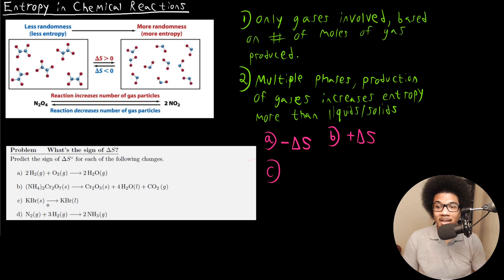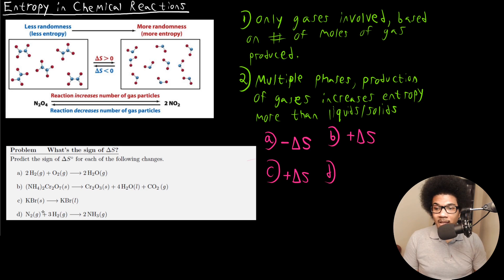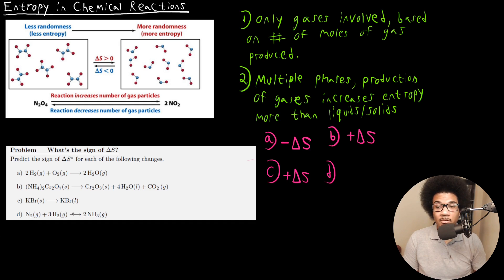For part C, we actually just have a phase change — we have KBr solid going through a phase change, becoming a liquid. This liquid is going to have a higher entropy than a solid, so we're going to have an increase in entropy. For part D, we have nitrogen gas reacting with hydrogen gas to produce two moles of ammonia gas. Again, all gases are involved. We start off with four moles of gas — one mole of N2 and three moles of H2 — and we end up with two moles of ammonia gas. So this is going to be a decrease in entropy.